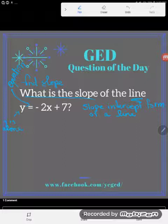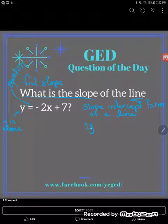They have the slope-intercept form of a line. And what you're going to notice that it says there is, it says this: y equals mx plus b. What we see is the y alone, just like mine, the y is alone.